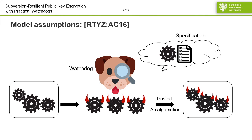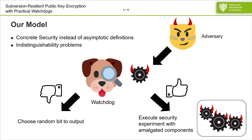So, how does our model look? As I said earlier, we use concrete security instead of asymptotic definitions, where the runtime of the watchdog is also a dedicated parameter. The adversary provides the implementations of the individual building blocks, which the watchdog then tests against the specification. If the watchdog detects some behavior that does not conform to the specification, it outputs a random bit — since we consider indistinguishability problems, this means the adversary loses and has advantage zero. Otherwise, if the watchdog approves of the implementation, we execute the security experiment with the amalgamated components and output whatever the security game outputs.